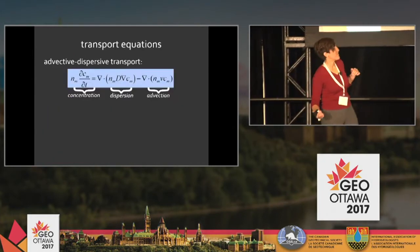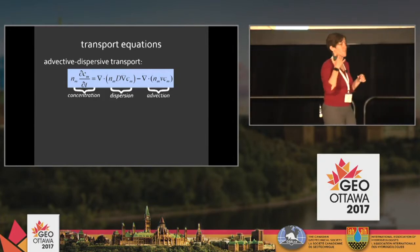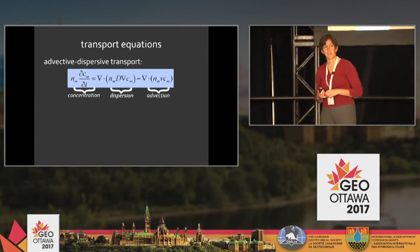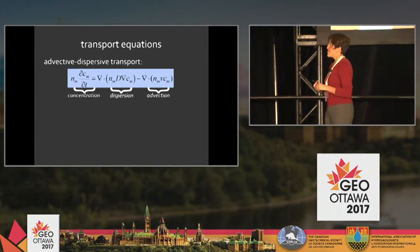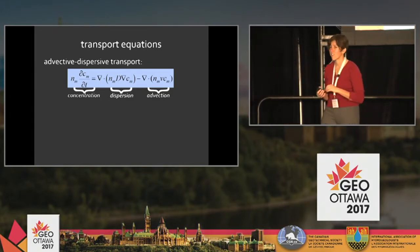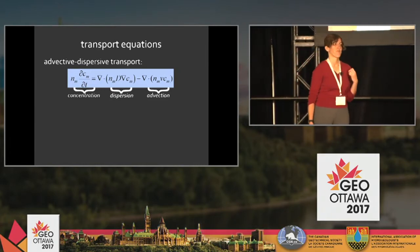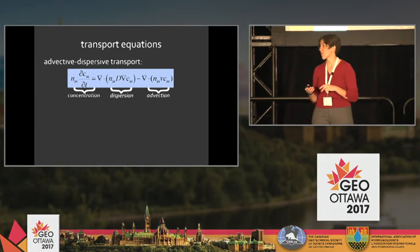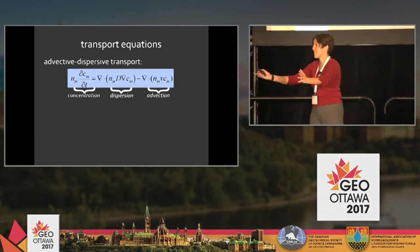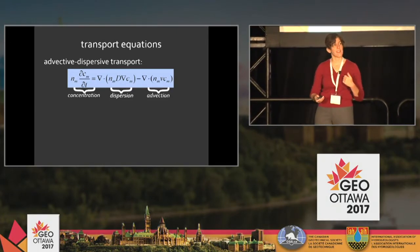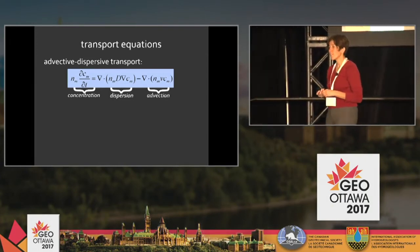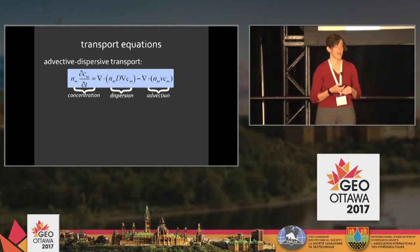Here's my favorite equation — the advection-dispersion equation, ADE. For those who haven't seen it, this is the equation we use to predict the movement of contaminants in the subsurface. The left-hand side says that if I want to predict concentration through time, I need two things on the right-hand side: dispersion and diffusion — how something spreads — and advection, controlled by V, the average linear velocity as described by Darcy's law. This is the equation that often doesn't fit the data we have.